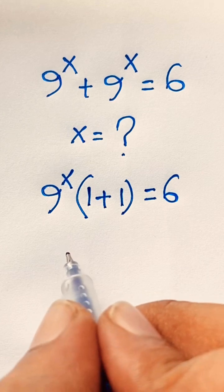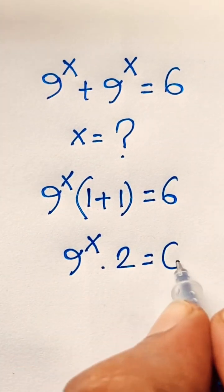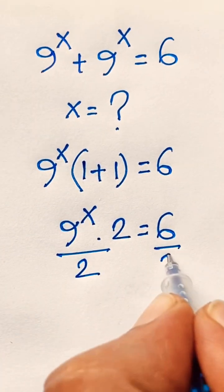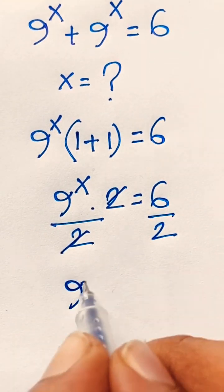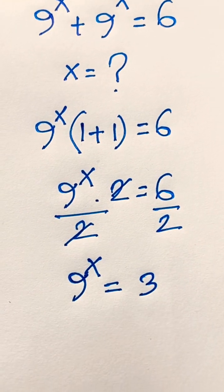Now 9 to the power x times 2 (that's 1 plus 1) equals 6. If I divide both sides by 2, this cancels out, and we find 9 to the power x equals 3, since 6 divided by 2 equals 3.